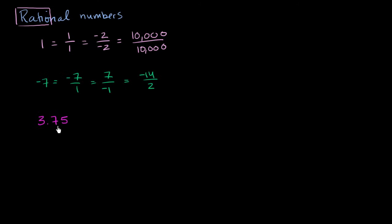Well, 3.75, you could rewrite that as 375 over 100, which is the same thing as 750 over 200. Or you could say, hey, 3.75 is the same thing as 3 and 3 fourths.